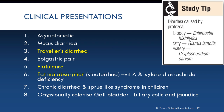Various clinical presentations may be seen in giardiasis: a patient may remain asymptomatic, or may develop mucous diarrhea or traveler's diarrhea, epigastric pain, flatulence, fat malabsorption leading to steatorrhea, or vitamin A and other fat-soluble vitamin deficiencies. Chronic diarrhea-like syndrome may also be seen in children, and it may colonize the gallbladder, causing biliary colic and jaundice. Study tip — diarrhea caused by famous protozoa: dysentery or bloody diarrhea is caused by Entamoeba histolytica; fatty diarrhea or steatorrhea is usually caused by Giardia lamblia; watery diarrhea can be caused by Giardia, but more commonly by Cryptosporidium parvum, which is an acid-fast parasite.